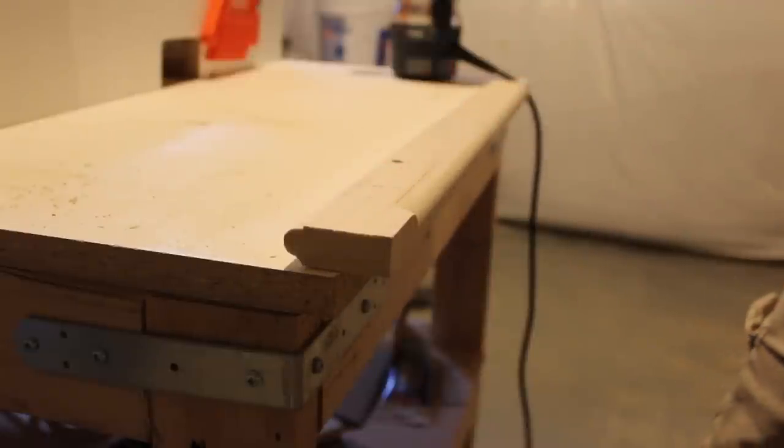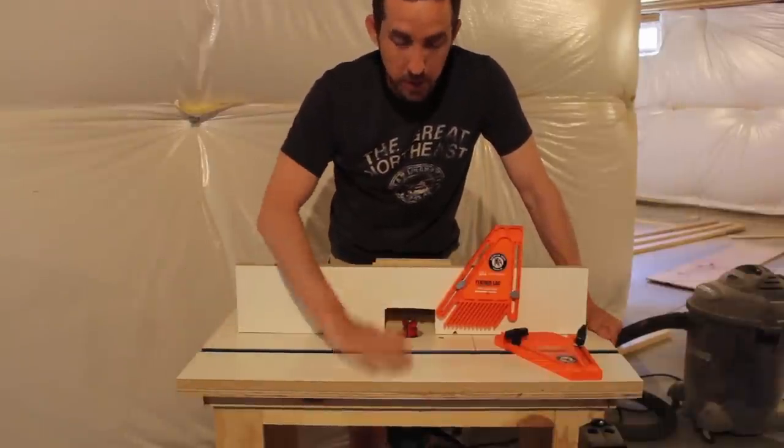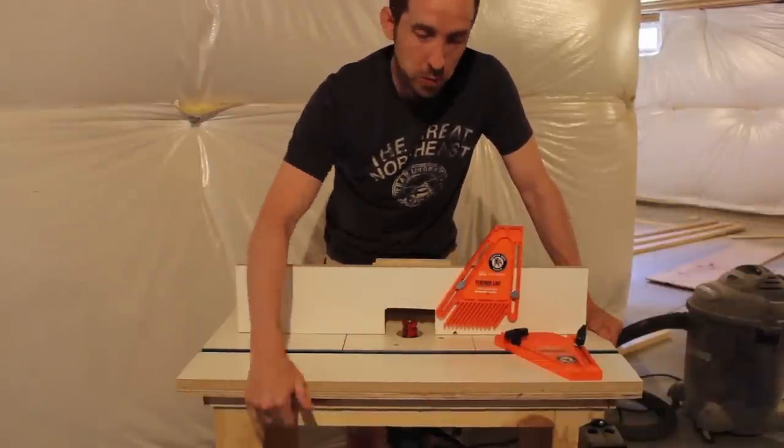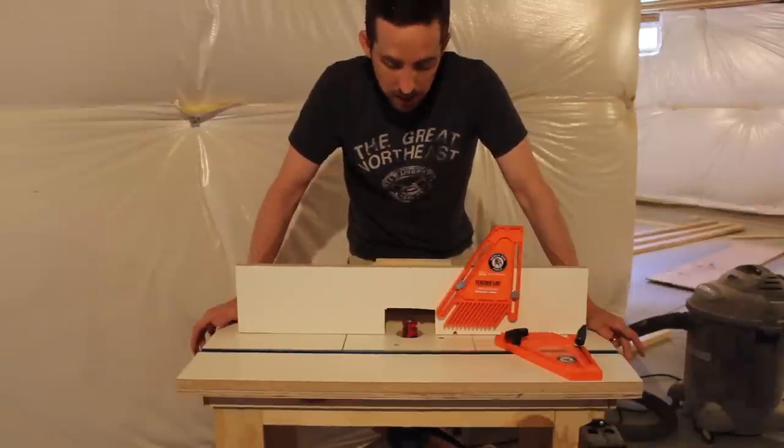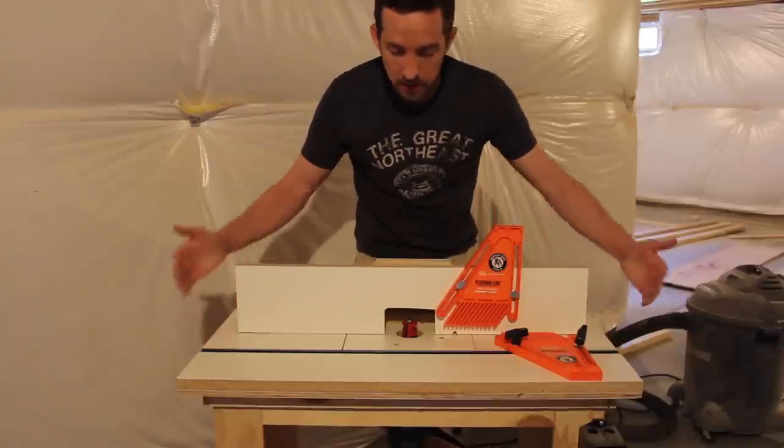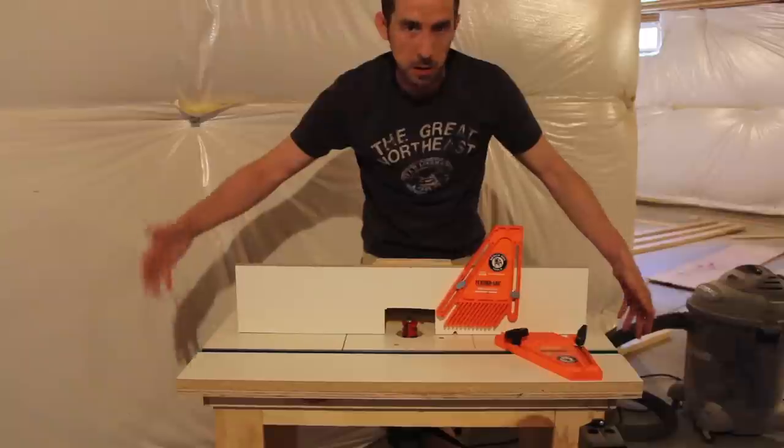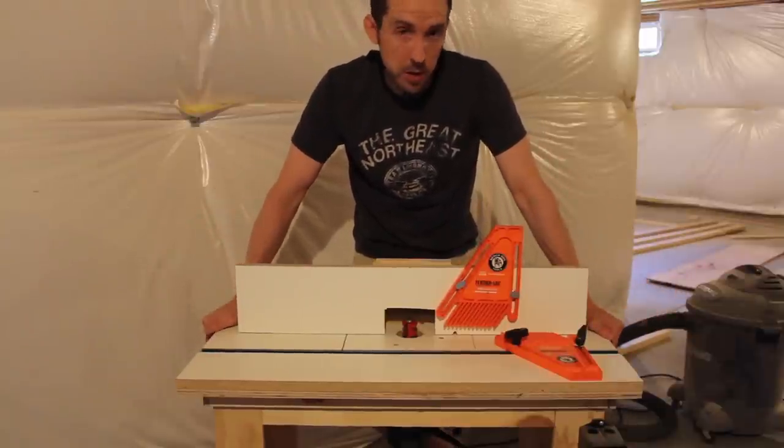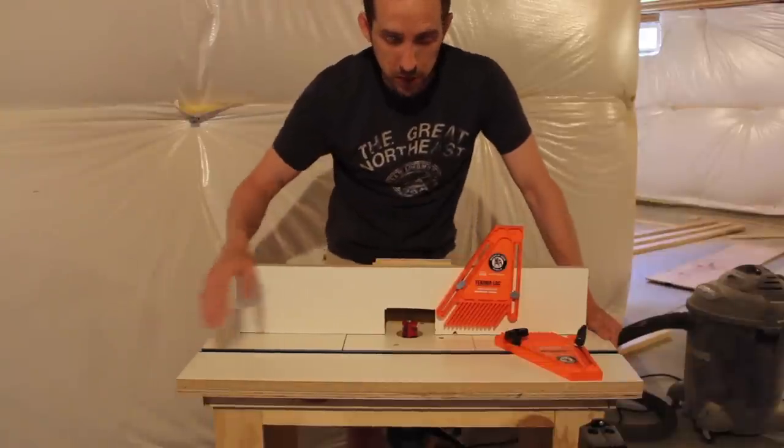Next up we'll take a look at the router table. This is my basic router table. It consists of some melamine for the work surface, as well as some plywood for the structure. The reason I built this instead of buying it, number one it was cheaper to do, and then I could get exactly the type of work surface dimensionally I wanted. It's been pretty useful so far, I've used it for a number of projects.